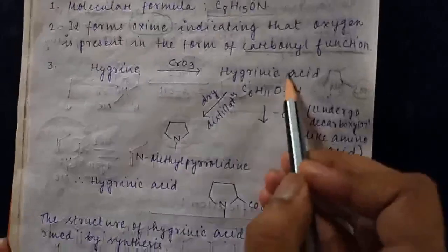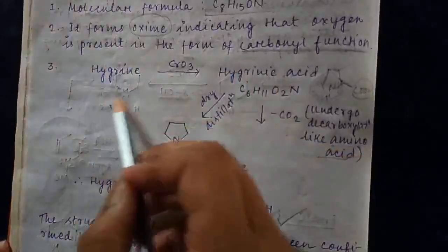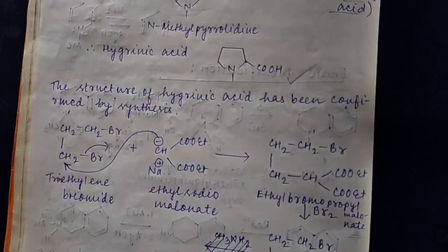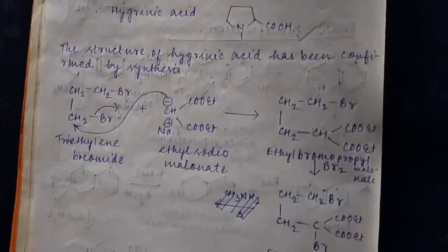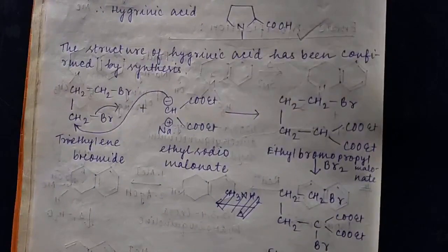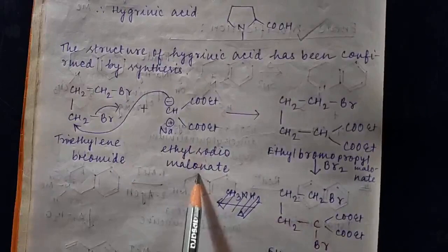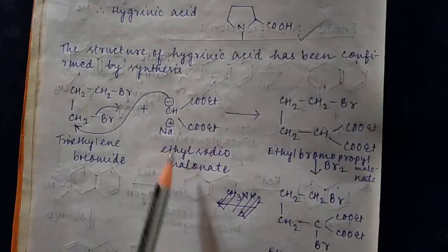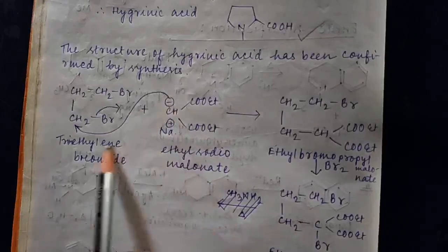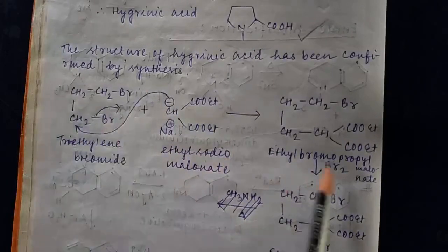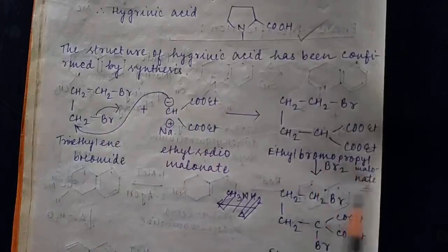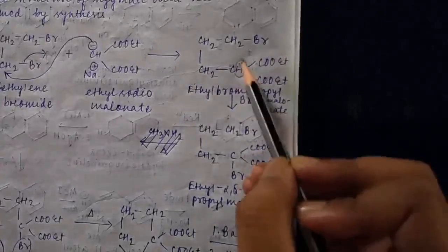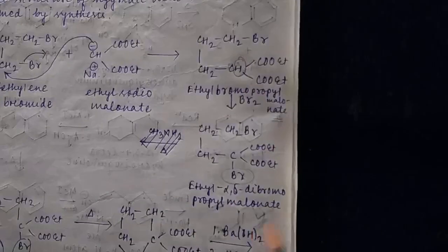The structure of hygrinic acid is further confirmed by its synthesis. Its synthesis is done with trimethylene bromide and ethyl sodium malonate. This is a simple condensation reaction. The anion of sodium malonate attacks CH2 to form ethyl bromopropyl malonate. Further, this compound is treated with Br2, and this product is formed.